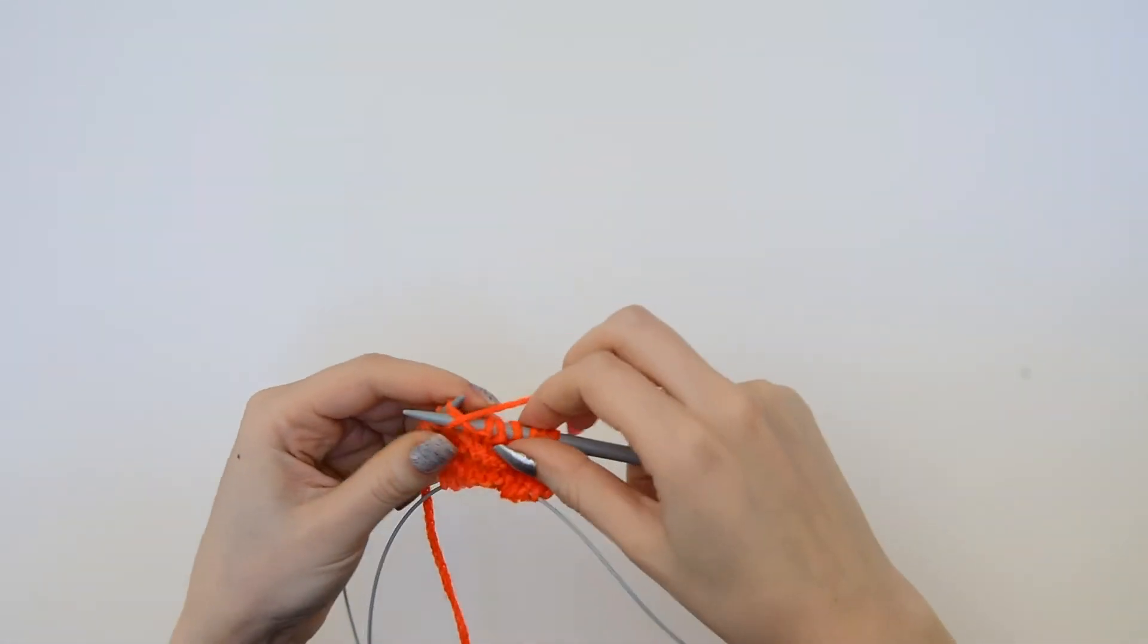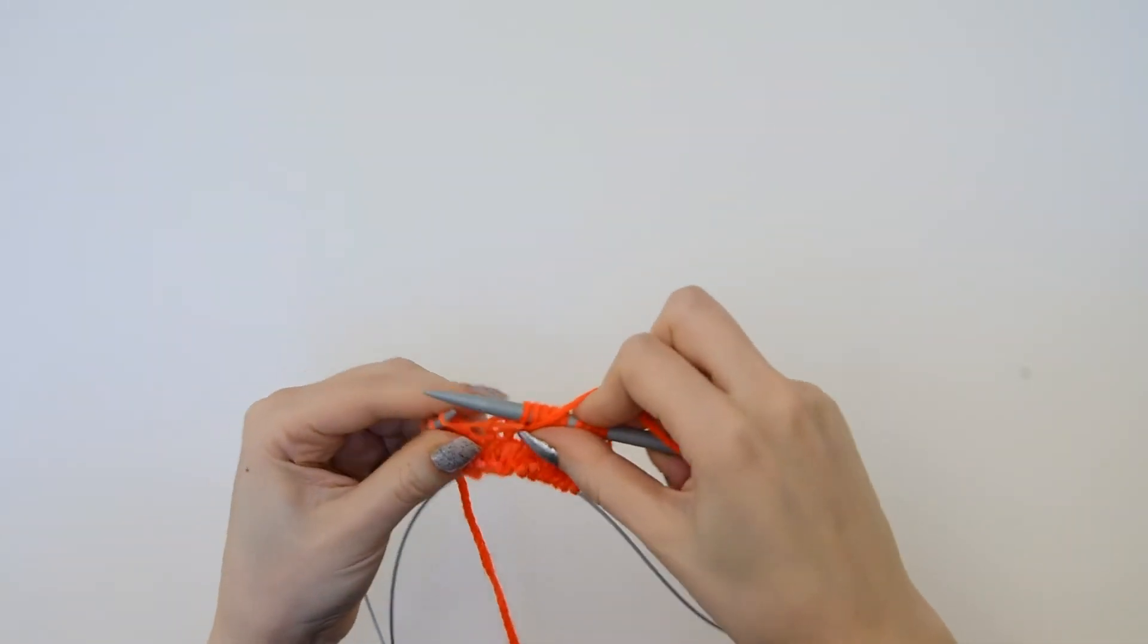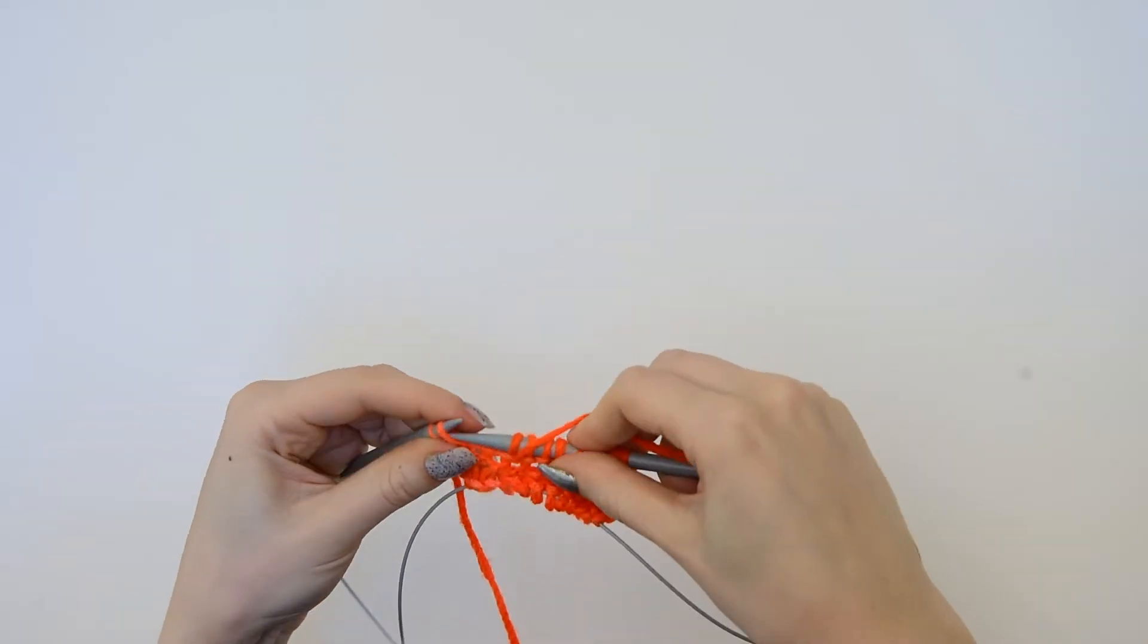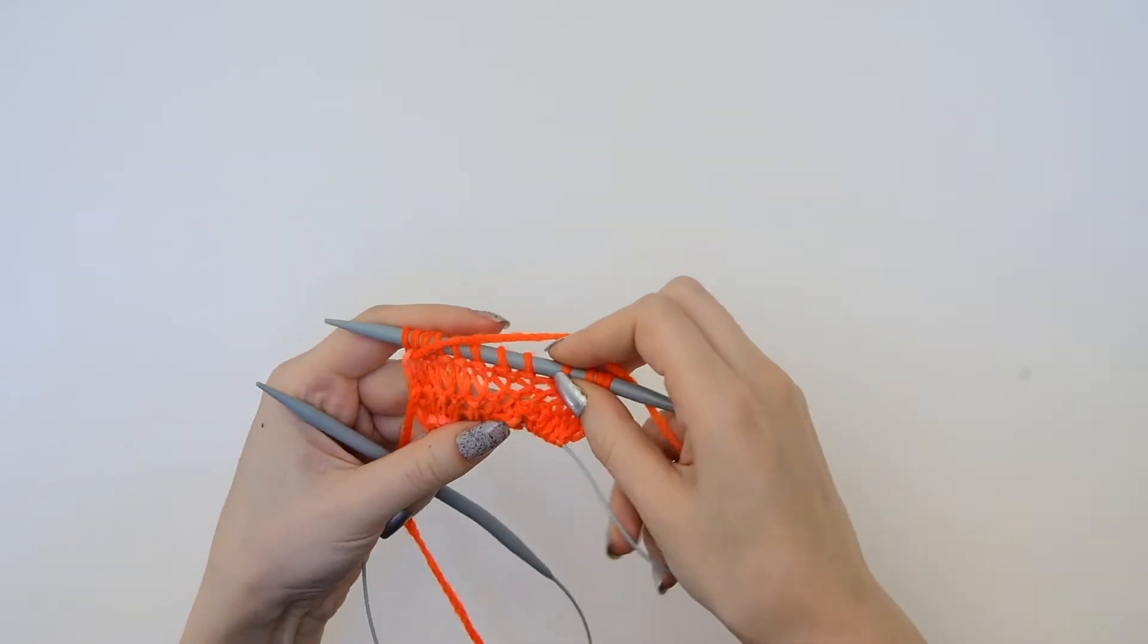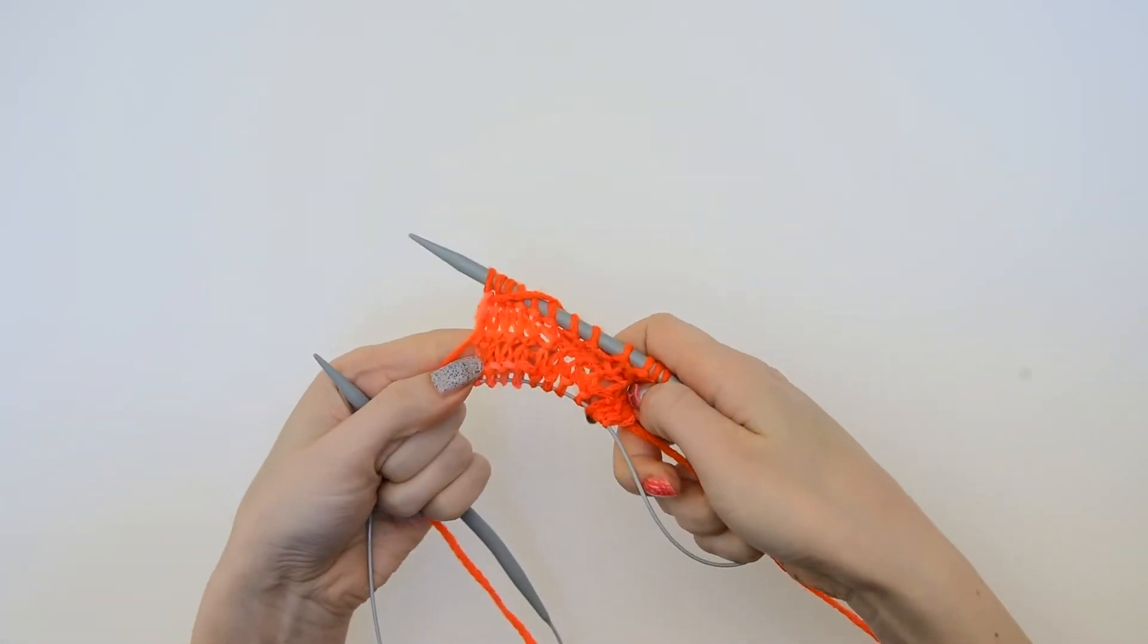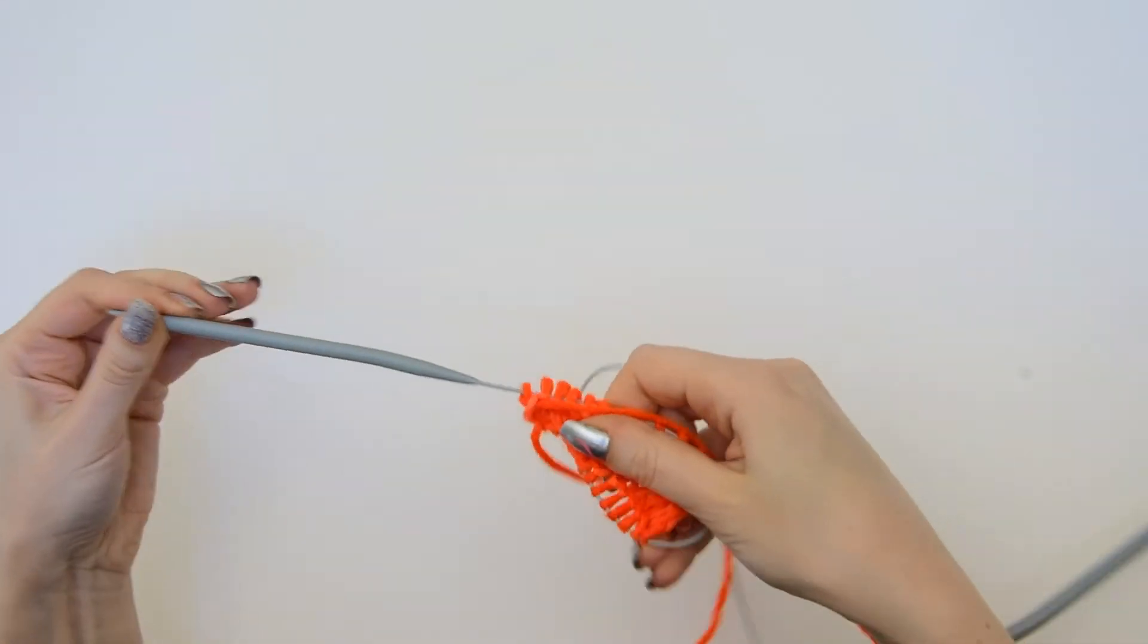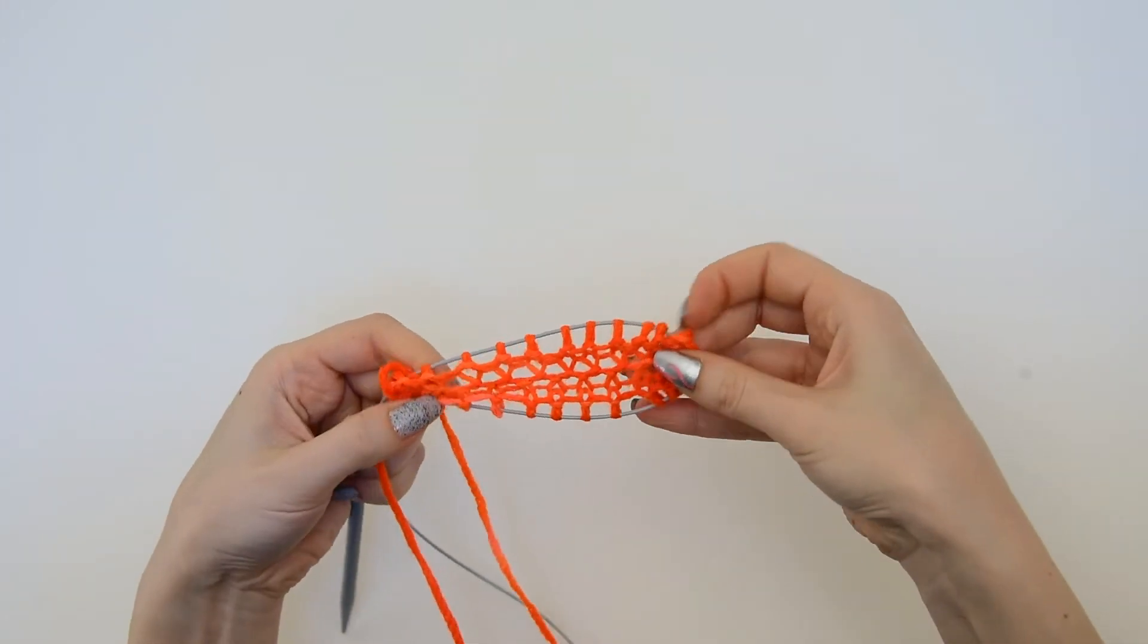I'm now almost finished with my second row after the cast-on, which is a purl row because I'm working circularly in garter stitch. And I think you can see that nice ridge in the center. And that's why we turned our cast-on upside down. And if I pull this out, you can start to get a sense of what this looks like.